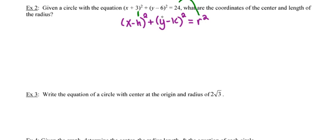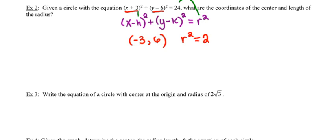Each of these is being subtracted. So I need to ask: what number do I subtract from x to get x plus 3? The x value must be negative 3, so that x subtract negative 3 gives x plus 3. And y subtract what gives y minus 6? The y value of the center is 6. The r squared equals 24, so r equals the square root of 24.